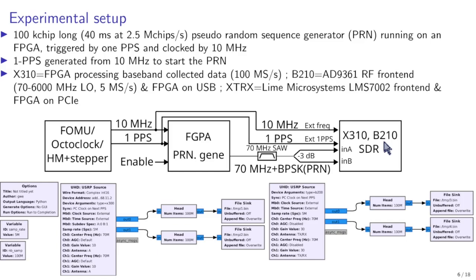And the XTRX which is a Lime Microsystems LMS7002 front end on a PCI Express board. So to qualify the software defined radio front ends we feed an external 10 megahertz and one PPS hoping that maybe the one PPS will allow us to synchronize the various A2D converter in addition to being clocked at the same frequency. And this qualification will be done by recording in two channels the same signal that was produced by a pseudo random number sequence generator in an FPGA where it was programmed by Gwen.